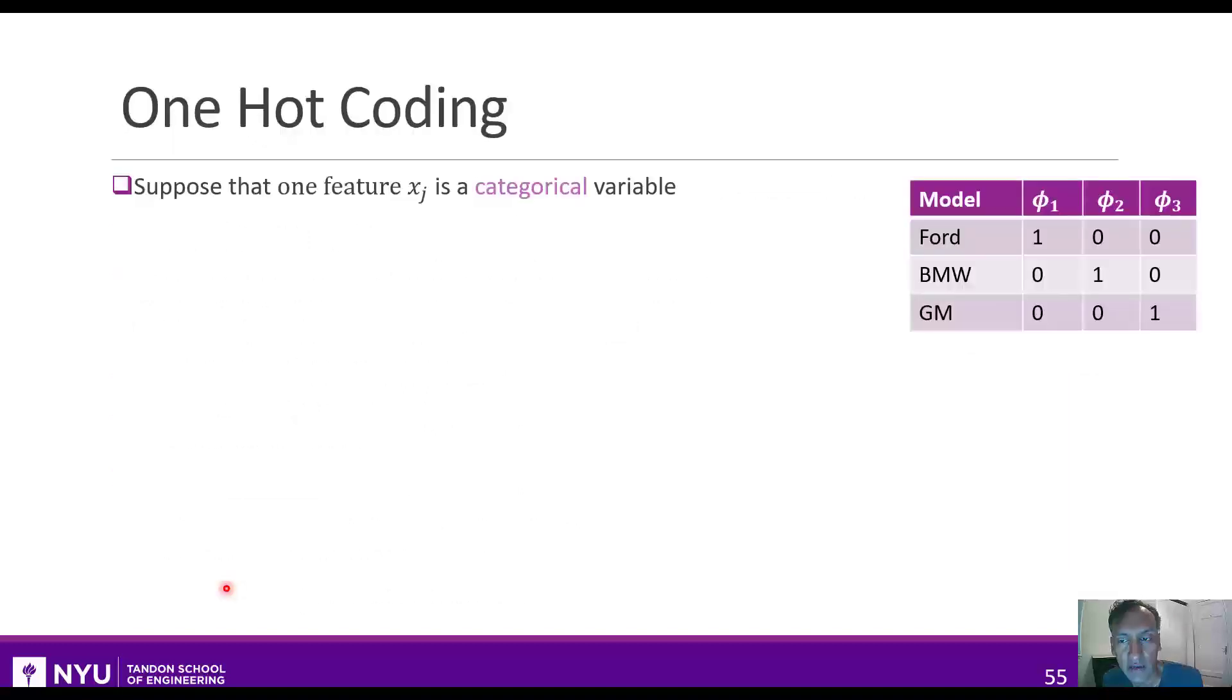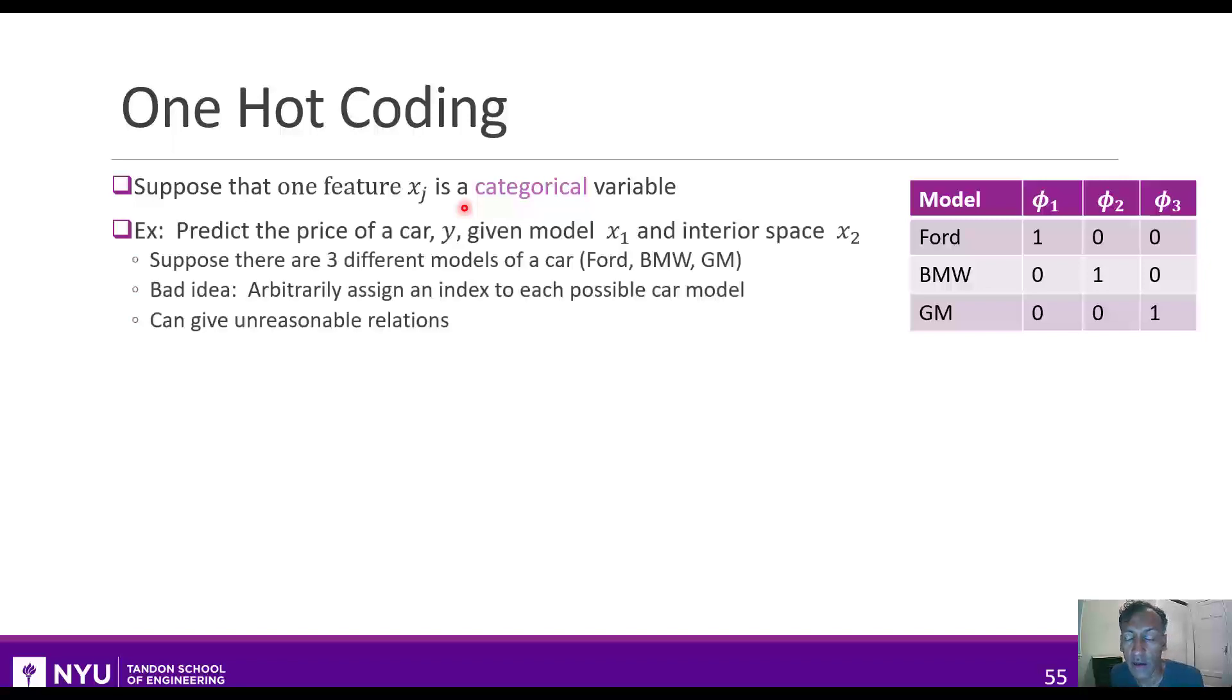One final technique that's useful when we're thinking about these extensions is called one-hot coding. So imagine that the feature xj is a categorical variable. A categorical variable is just a variable that can take a discrete number of categories. Just as an example, suppose I'm trying to predict the price of a car given the model and the interior space. So two features. The model is a categorical variable because you can take on, let's say, three values. Ford, BMW, or GM.